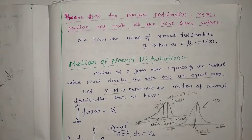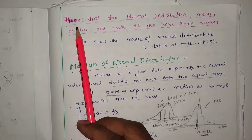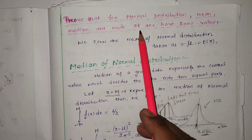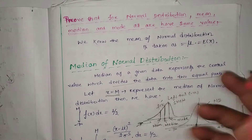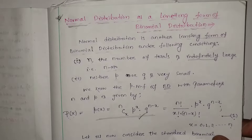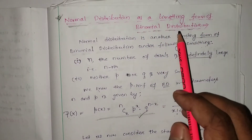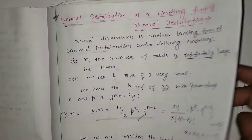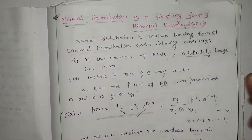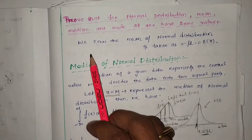Good morning. In this class we are going to prove that for normal distribution, mean, median and mode all have the same value. In our previous class we discussed in detail about normal distribution as a limiting form of binomial distribution. I suggest you watch that video carefully and write down notes, because notes are always important from an exam point of view. Now we start this topic.